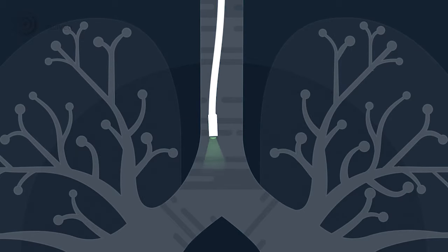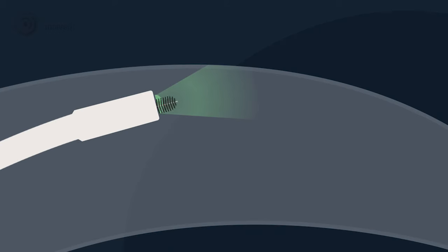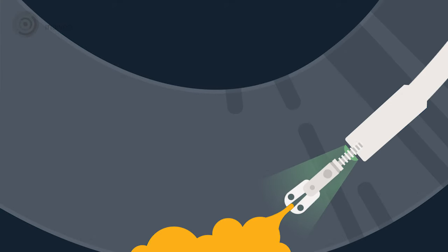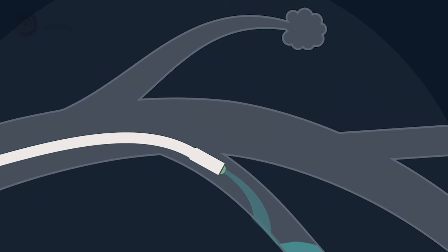The physician will use the camera on the bronchoscope to look at the inside of the trachea and the branches. Mucus, a scraping, or tissue may be collected for further laboratory examination. Sometimes the airways are rinsed with a fluid.